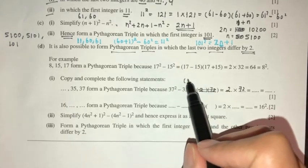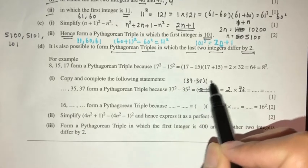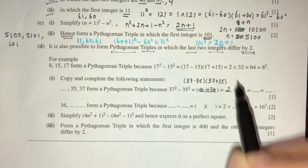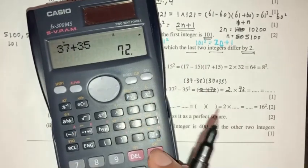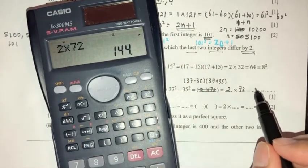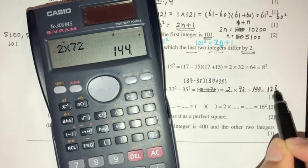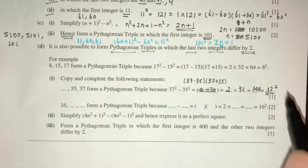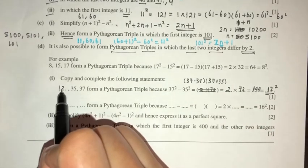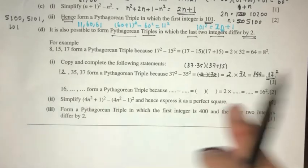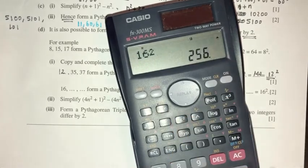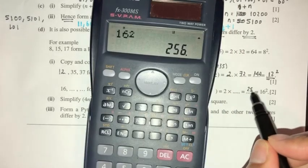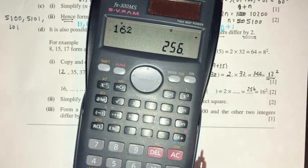Writing it out: 37 minus 35 times 37 plus 35. Simplifying: 2 times 72 equals 144, which is 12 squared. That is your first answer. For part 2, 16 squared equals 256, and 256 divided by 2 is 128.